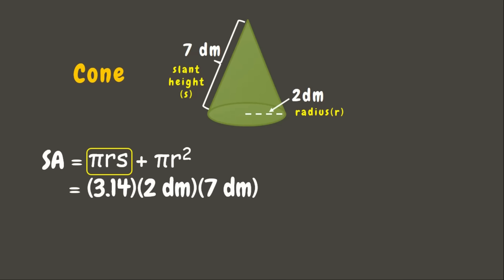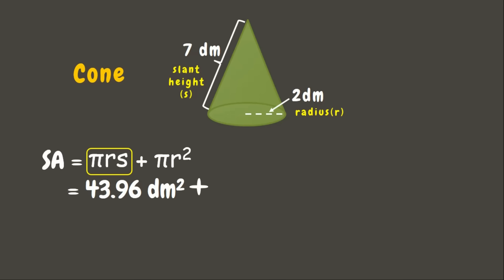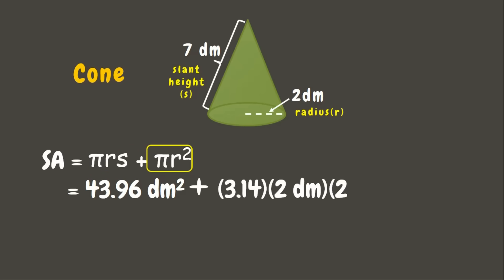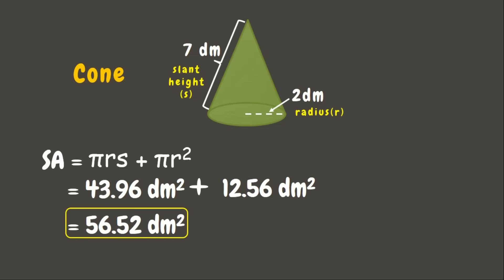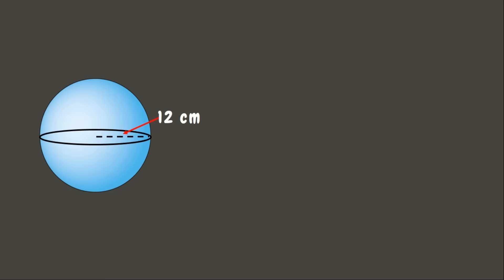Multiplying gives 43.96 square decimeters. Next, we have πr squared — pi (3.14) times the square of the radius: 2 decimeters times 2 decimeters — and that is 12.56 square decimeters. Adding the two areas, the answer is 56.52 square decimeters. This is the surface area of our cone. Awesome!